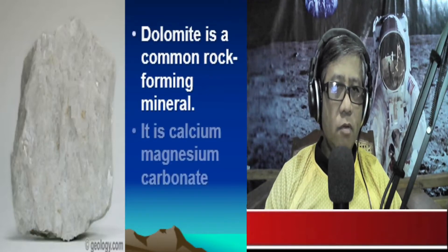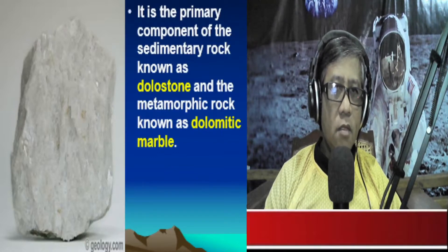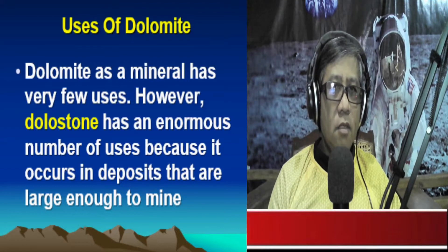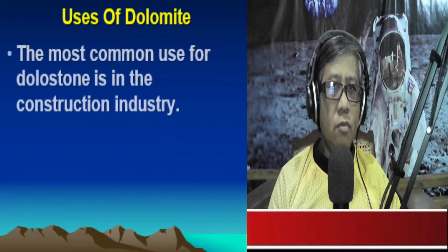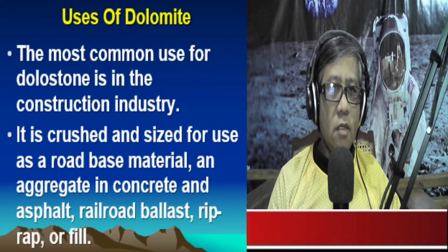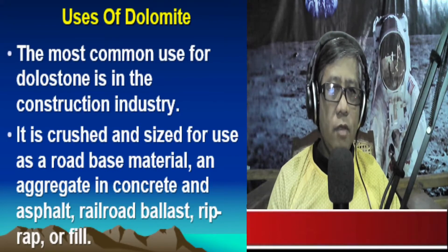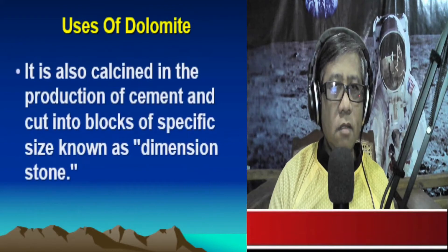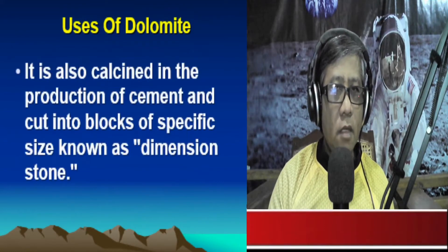For this lesson we shall study the mineral known as dolomite. Dolomite is a common rock-forming mineral made up of calcium magnesium carbonate — chemical formula CaMg(CO₃)₂. Dolomite is the primary component of the sedimentary rock known as dolostone and the metamorphic rock known as dolomitic marble. Limestone that contains some dolomite is known as dolomitic limestone.